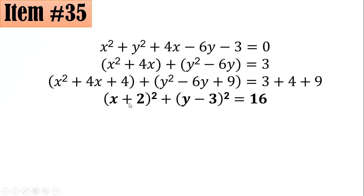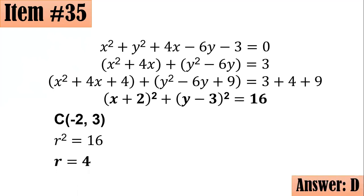Equating each of these to 0, you have -2 and 3, which is the coordinates of your center. This 16 is the value of your r². Taking the principal square root, you've got the radius, which is 4 units. Hence, the center is at (-2, 3) with a radius of 4 units, letter D.